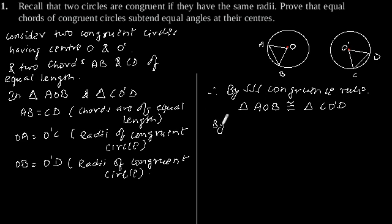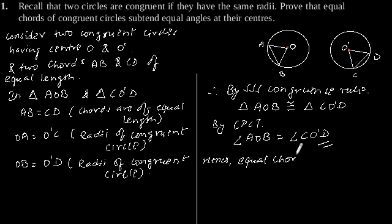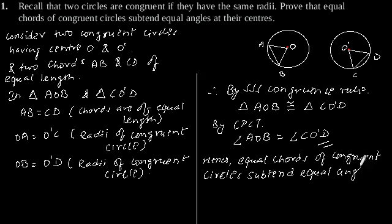By CPCT, angle AOB equals angle CO'D. Hence, equal chords of congruent circles subtend equal angles at their centers.